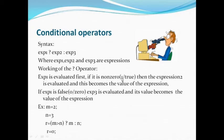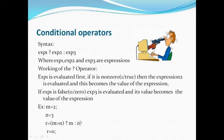Expression1 is evaluated first. If it is non-zero then expression2 is evaluated and this becomes the value of the expression. If expression1 is false, expression3 is evaluated and the value of expression3 will become the value of the expression. In this case, 2 is greater than 3 is false, so it evaluates expression3 — the value of r will become 3, that is the value of n.